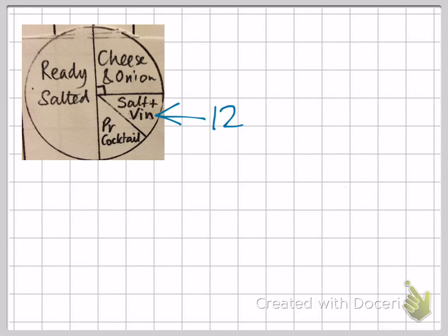So let's go back to the crisp flavor question again. This time we don't know how many children are in the entire circle, but we are told that 12 children like salt and vinegar. Because we can see the proportions or the fractions of each of these flavors in the whole circle, we can use this statistic to help us.